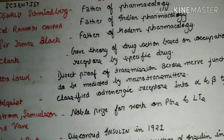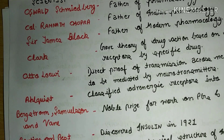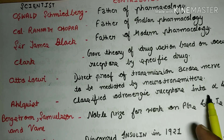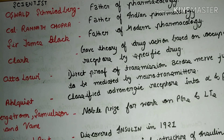The next scientist is Ahlquist. Ahlquist classified adrenergic receptors into alpha and beta types. Just as we will study the cholinergic system, we will also study the adrenergic system in further lectures, covering what adrenergic receptors are and how they were classified.